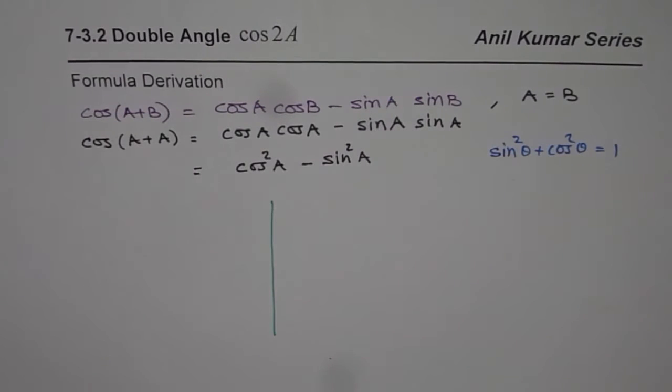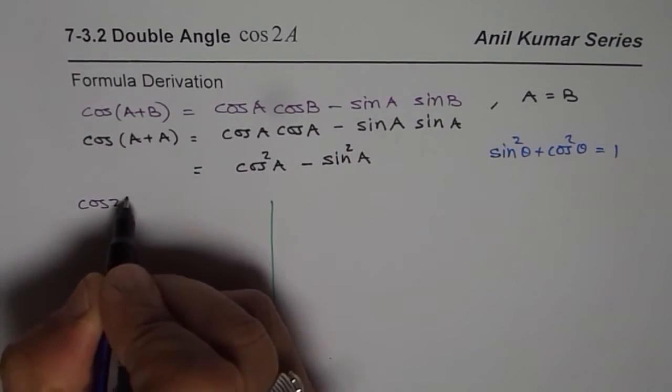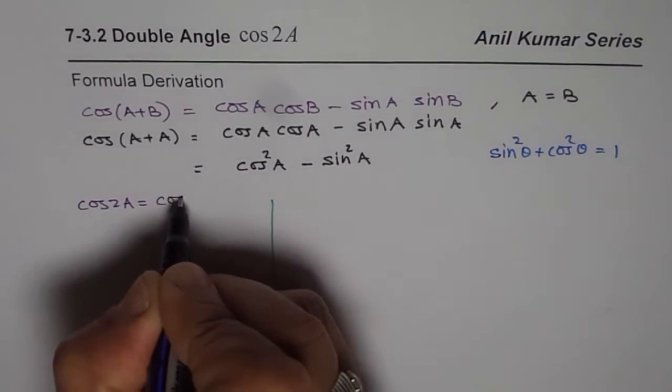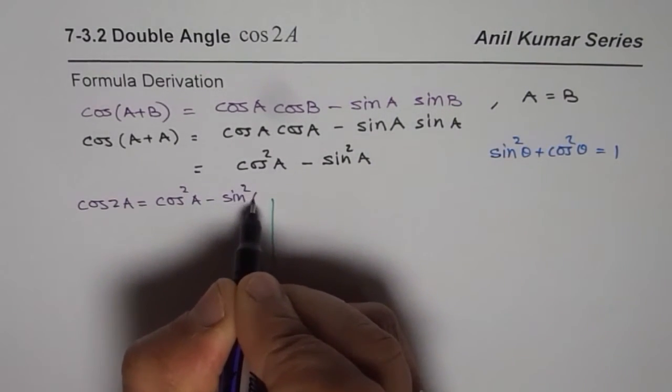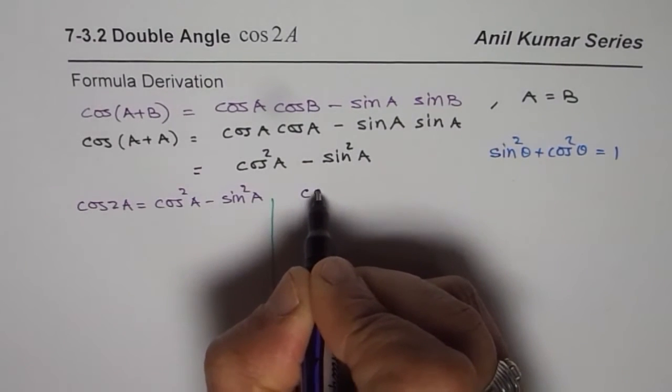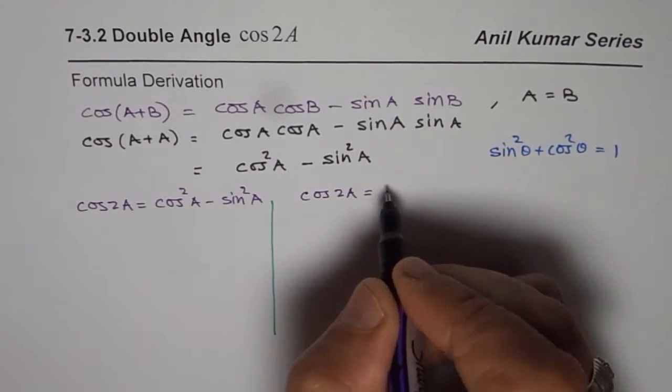Beginning with the one which we just found, which is cos 2A equals to cos square A minus sin square A. You can also pause your video and solve it, and then check your answer.